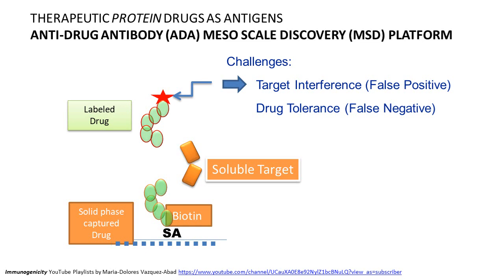There are many ways to address target interference during assay validation, such as acid dissociation or overnight incubation, to ensure that when testing patient serum the soluble target has been removed or sufficiently diluted. However, care must be taken not to dilute any anti-drug antibodies that may be present in the patient's blood. This balance is one of the key challenges when validating anti-drug antibody assays — particularly when the drug has a soluble target and patients are likely to have that target circulating in their blood.